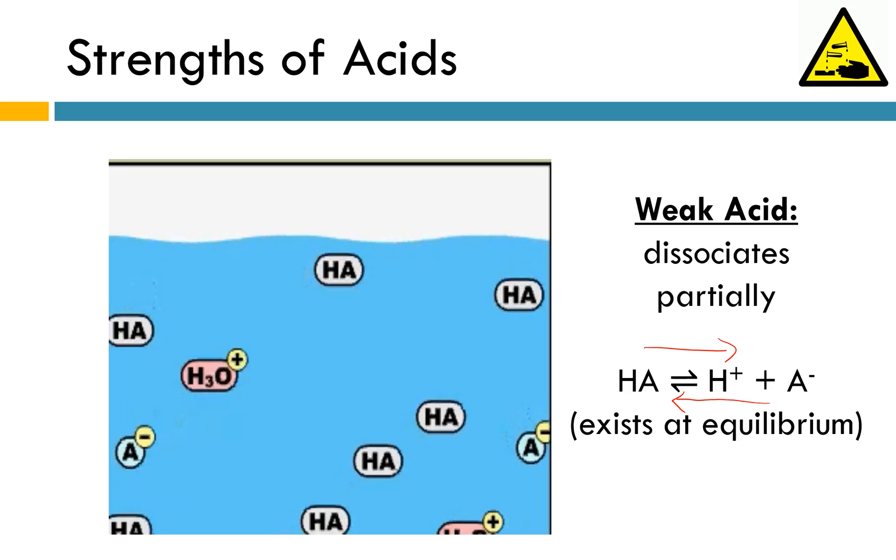So the strength of acids and bases, for that matter, depend on the extent of dissociation. Strong acids and strong bases dissociate completely. They produce all ions and there is none of the original substance left. Weak acids and weak bases only dissociate partially. You end up with a lot of your original material, in this case HA. You have some ions floating around in solution, but to a much lesser extent. This is a reversible reaction.